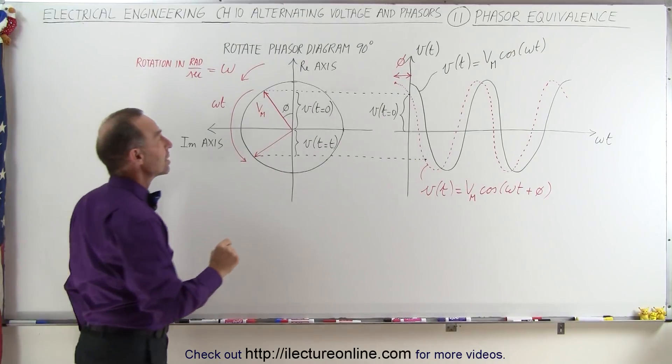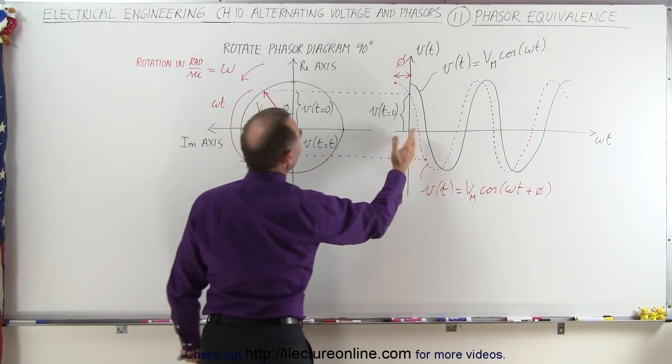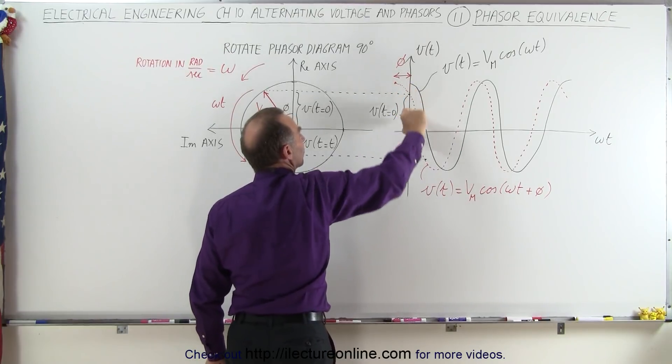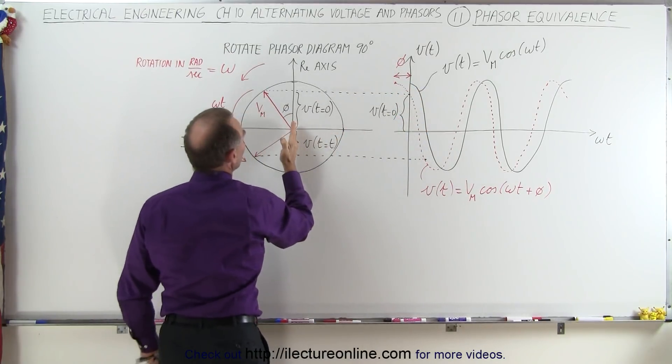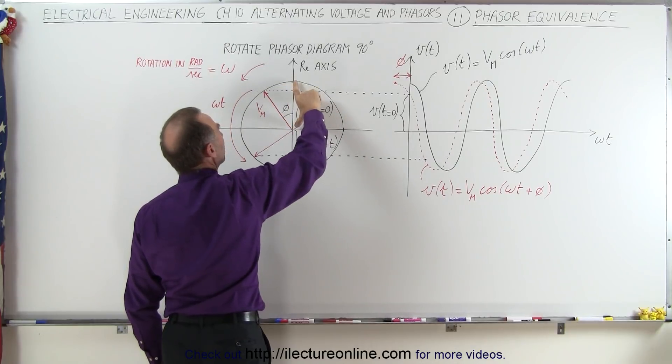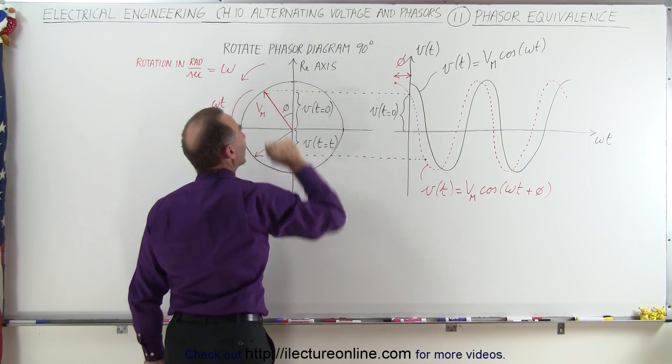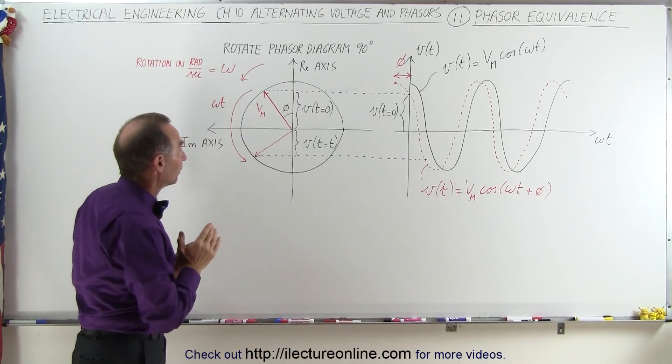The reason why we do that is so we can draw the analogy between the two graphs. If we didn't have any phase difference and at time equals zero the voltage would be the full amount, then we would draw the phasor diagram straight up here, and that would be the full voltage at time equals zero.